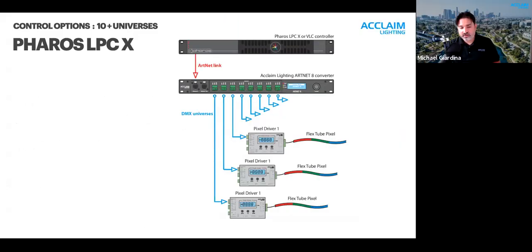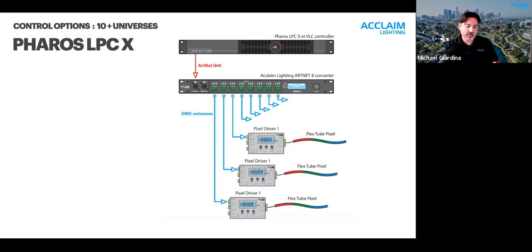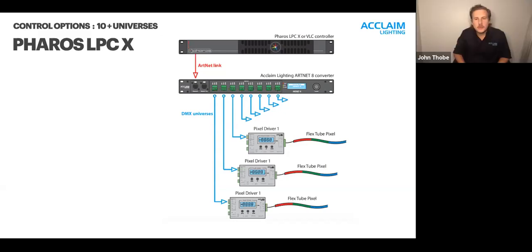Looking at how LPC X can break out into standard hardware DMX: the Acclaim Artnet 8 device takes eDMX from the Pharos device and converts it to eight standard DMX outputs. From there you can run DMX directly to your fixtures or to DMX splitters. Since there are eight ports on the Artnet 8, you divide your total DMX universes by eight to determine how many Artnet 8 units you'll need — for a 20-universe system, you'd need three.